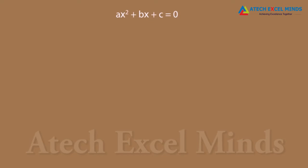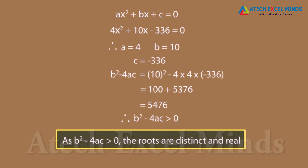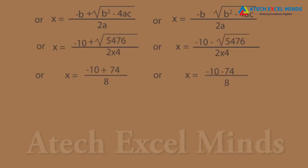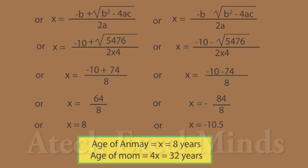Now let's solve the age problem using the quadratic formula. Compare the quadratic equation with ax² + bx + c = 0 to get the values of a, b, and c. Find b² − 4ac to determine the nature of roots. Since b² − 4ac > 0, the roots are distinct and real. Applying the quadratic formula gives x = 8 and x = −10.5. Since age can't be negative, x = 8. Thus, the age of Anmay is 8 years and his mom is 40 years.